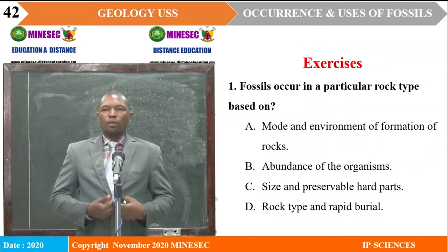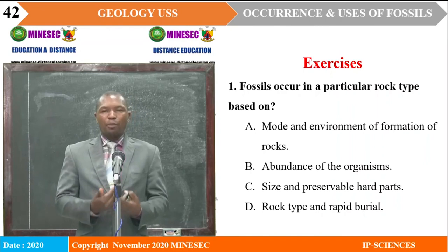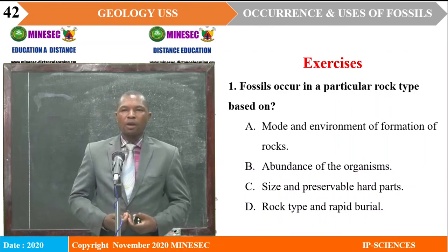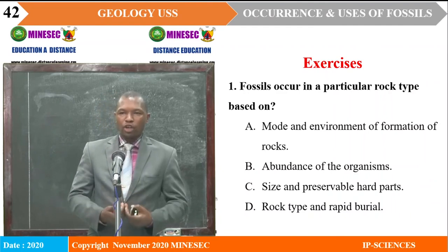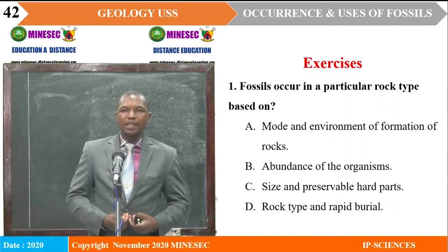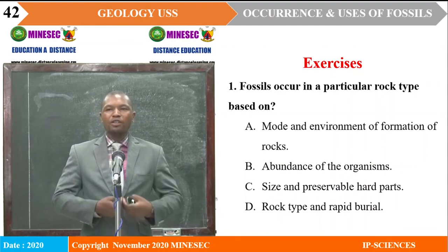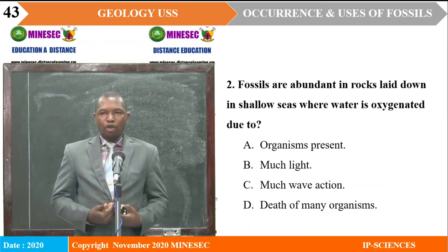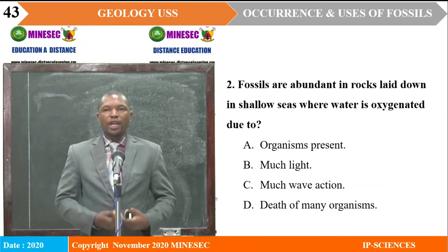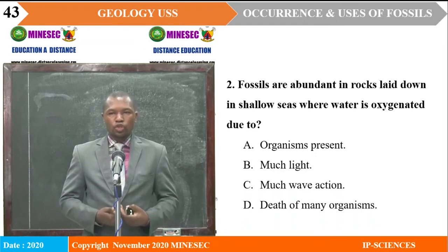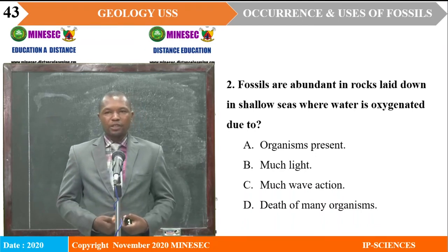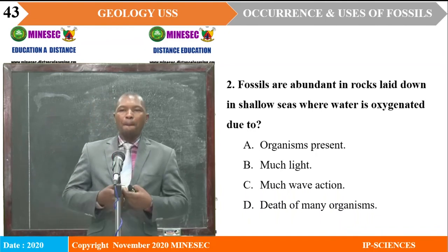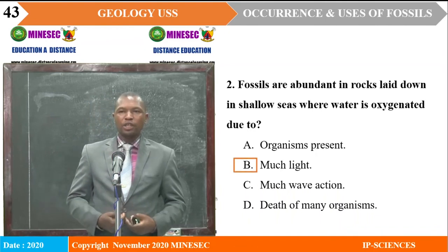Now for some exercises. Question 1: Fossils occur in a particular rock type based on — A: mode and environment of formation of rocks; B: abundance of the organisms; C: size and preservable hard parts; D: rock type and rapid burial. The correct answer is A. Question 2: Fossils are abundant in rocks laid down in shallow seas where water is oxygenated due to — A: organisms present; B: much light; C: much wave action; D: death of many organisms. The correct answer is B — much light.